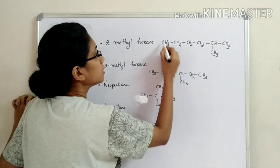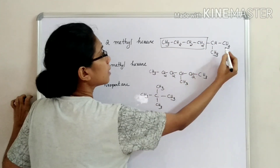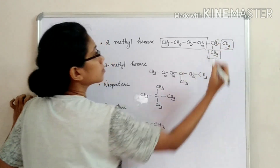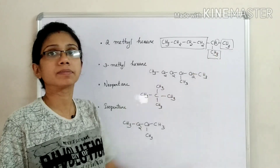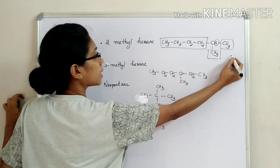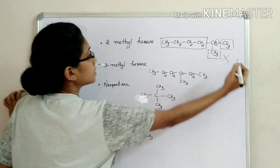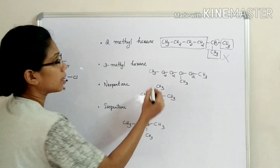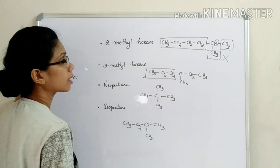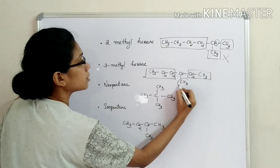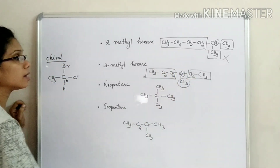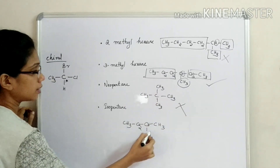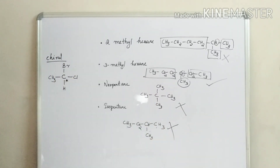Looking at 3-methylhexane: here we have one group, another group, another group, and a hydrogen — all four are different. That makes it chiral. For isopentane, we have two identical groups, so it is not chiral. The answer is option B, 3-methylhexane.